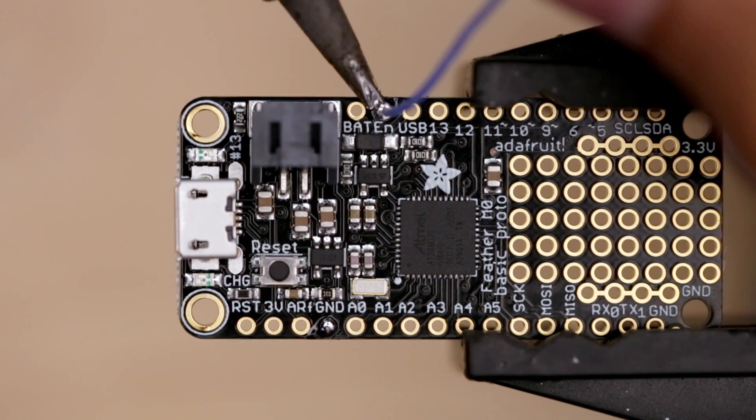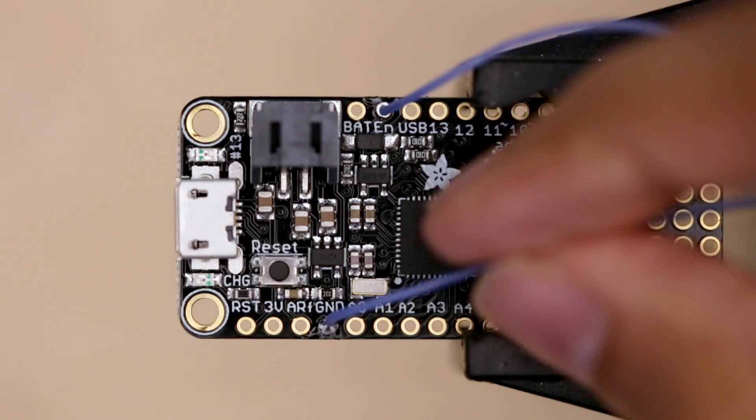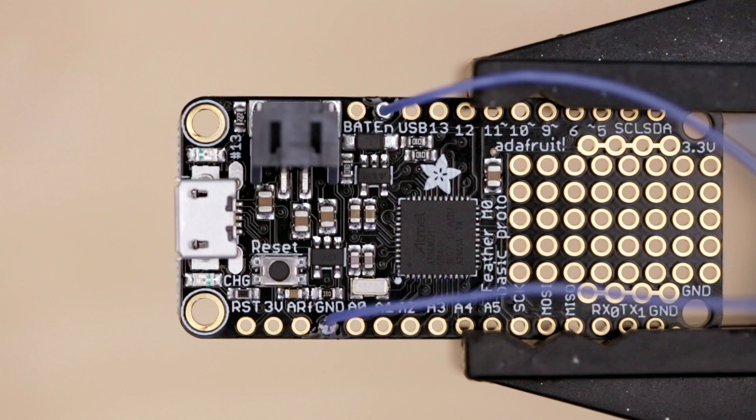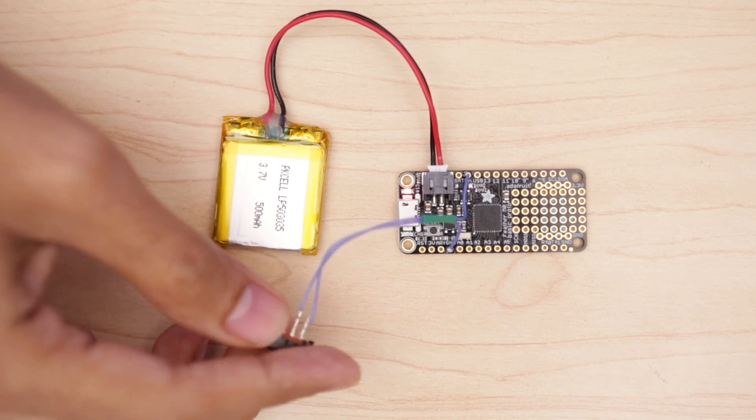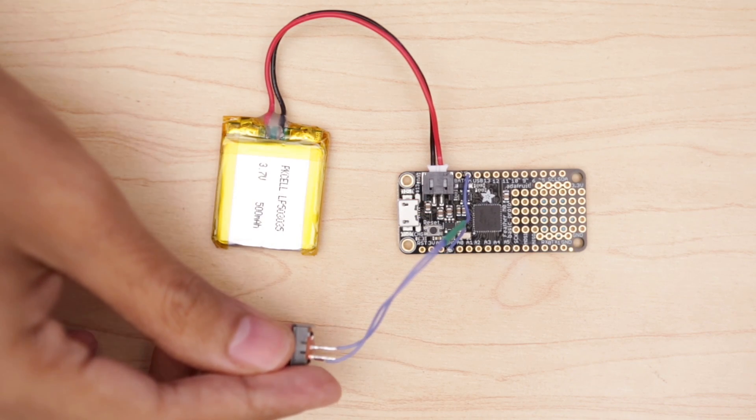Now we can solder the two wires from the side switch to the enable and ground pins on the Adafruit Feather. We can plug in a battery to test out the slide switch. When the enable pin is tied to ground the circuit will power off.